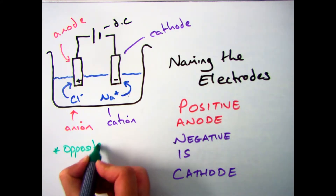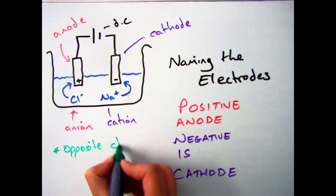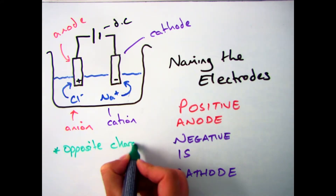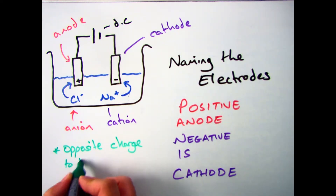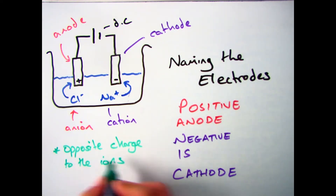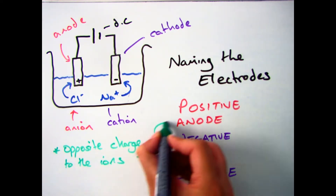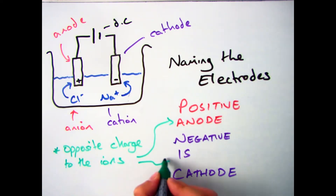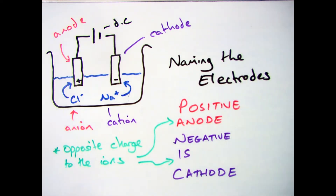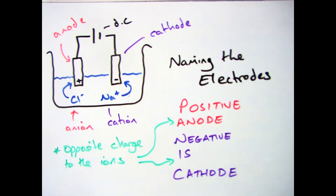Another way of remembering it is that they are opposite charges. If your cation is positive, your cathode is going to be the opposite charge — it's going to be negative. Your anion is a negative ion, therefore it's going to go to the anode, which is going to be positive because it's the opposite charge.